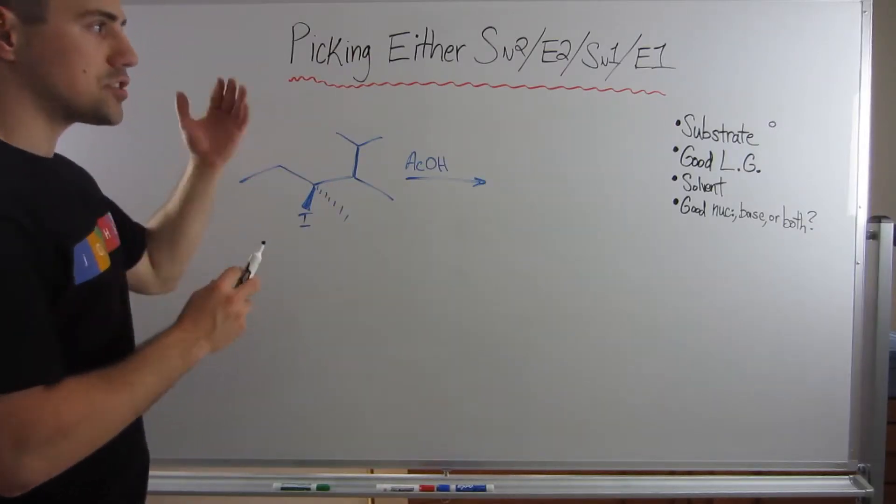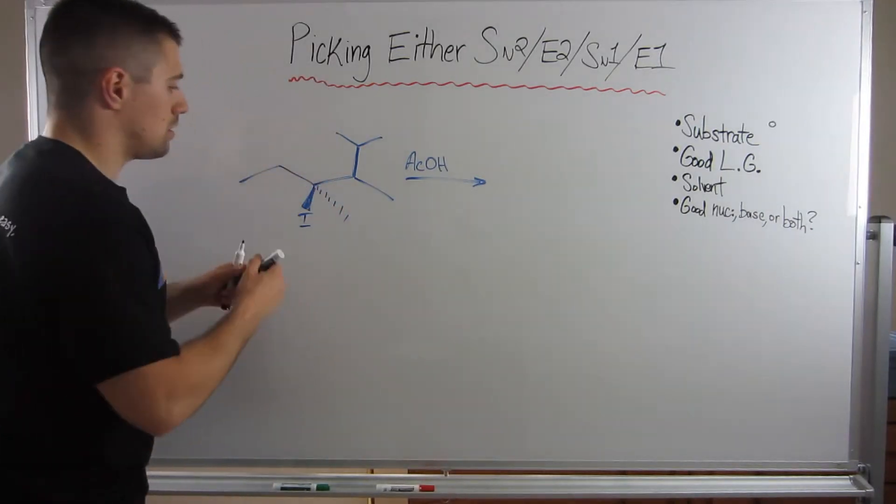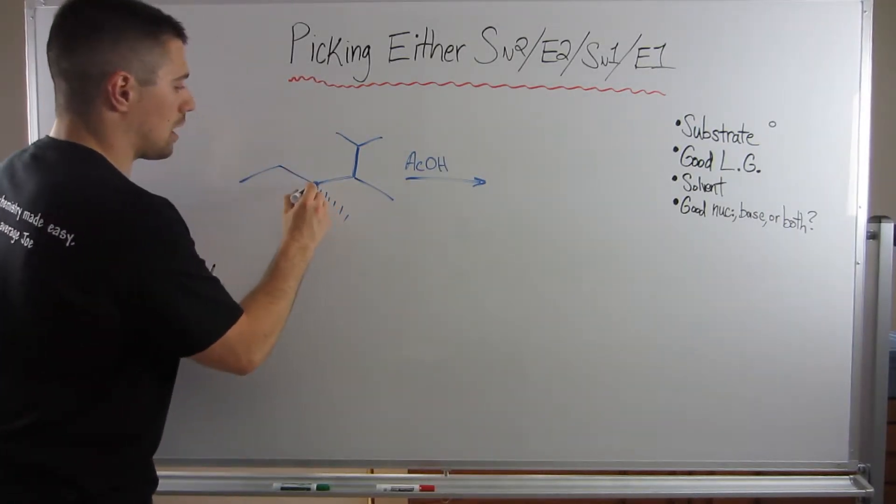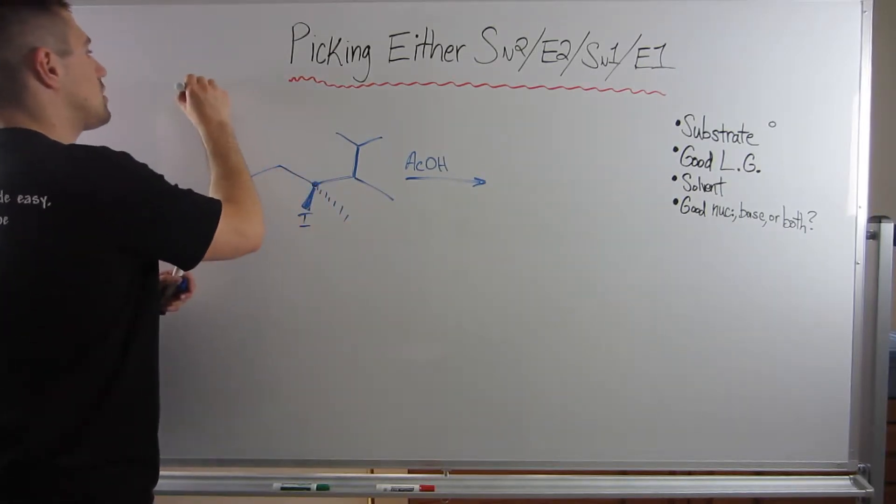So given what we have right here, let's go through our checklist. Right here, our substrate, at this point, we got one bond of carbon, two bonds of carbon, three. This is a tertiary substrate.